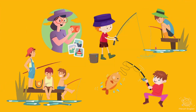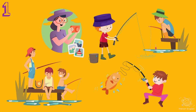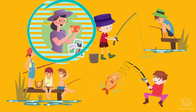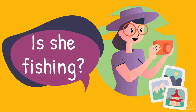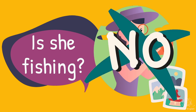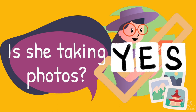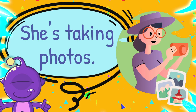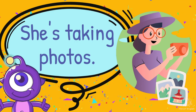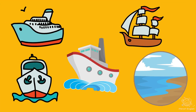Find the odd one out. 5, 4, 3, 2, 1. Is she fishing? No. Is she taking photos? Yes! She's taking photos. Yes!